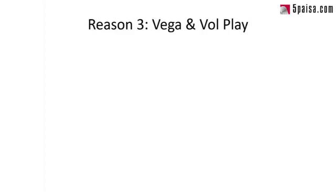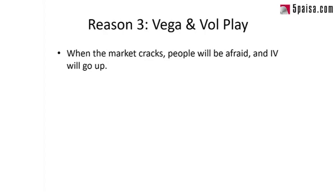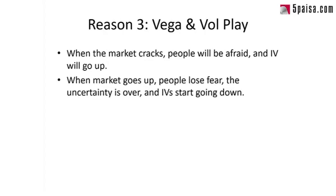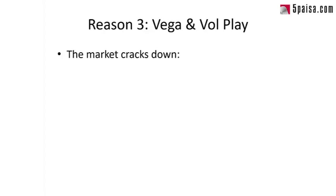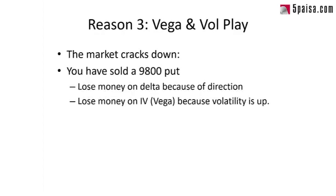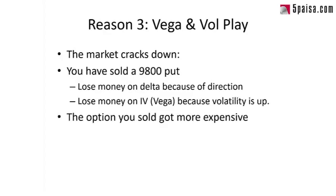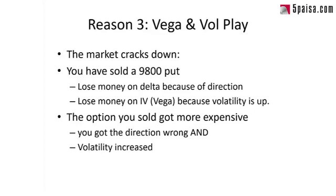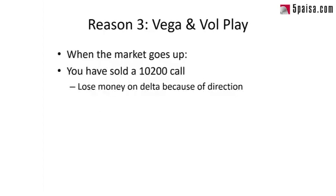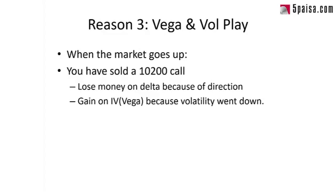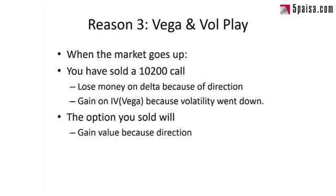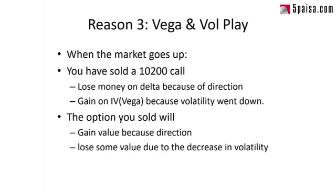Reason number three is an interplay between Vega and volatility. When the market cracks, people get afraid and IV goes up; when the market goes up, fear subsides and IVs go down. So if the market cracks and you've sold a 9,800 put, you lose money on Delta because of direction, and you also lose money on Vega because volatility goes up — the option got more expensive because you got both direction and volatility wrong. Conversely, if you sold a 10,200 call and the market goes up, you lose money on Delta but actually make money on Vega because vol went down.